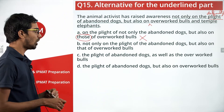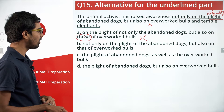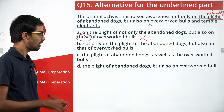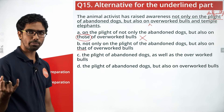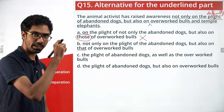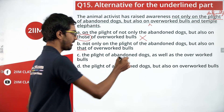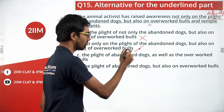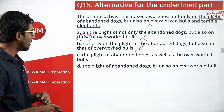Option B: 'Not only on the plight of the abandoned dogs but also on that of overworked bulls' — this seems perfect. 'That' addresses the singular part, referring to 'plight' as singular, and this covers the entire sentence as well. So this one seems right.